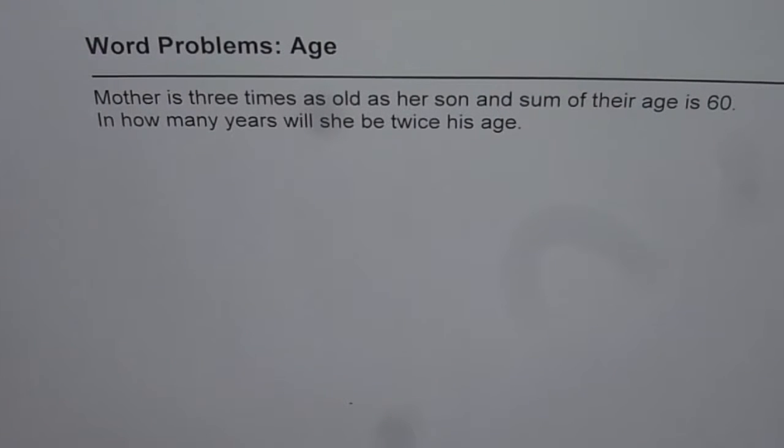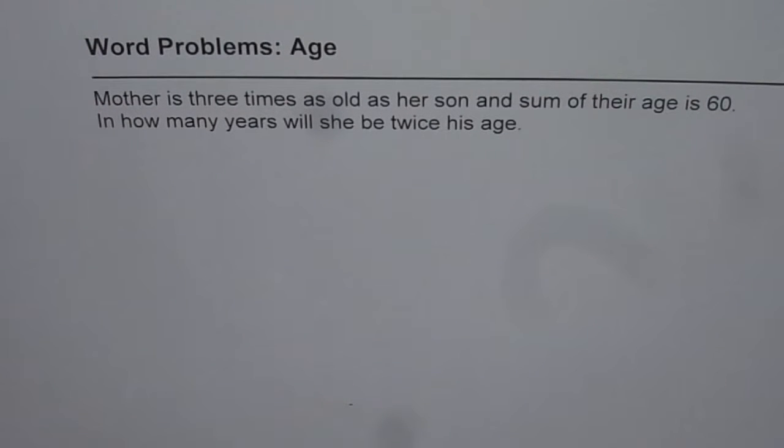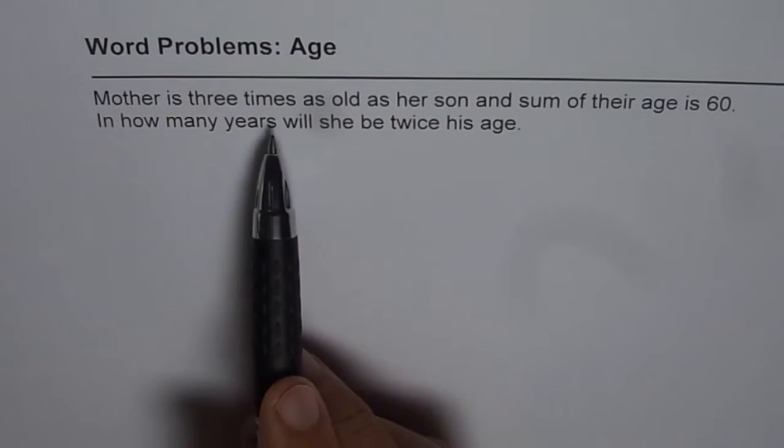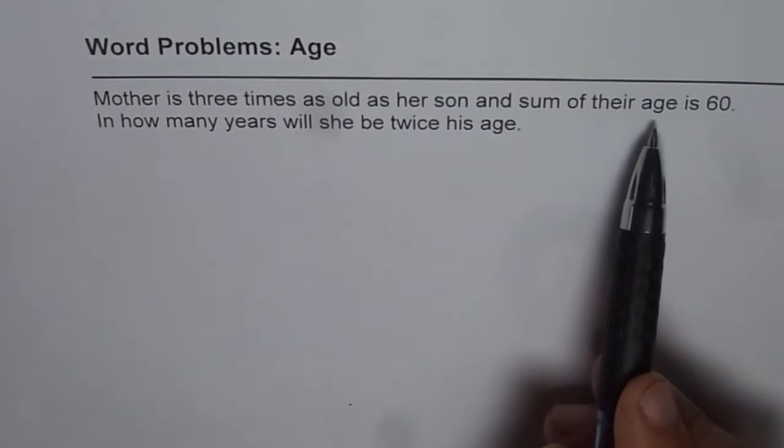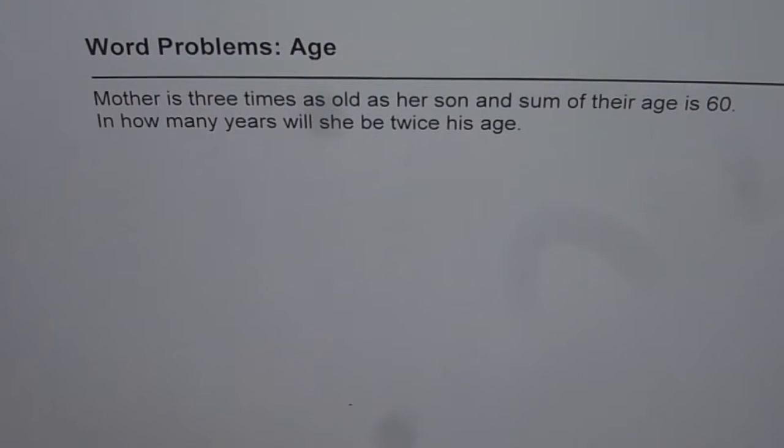Let us see how to solve word problems relating to age. The question here is: mother is three times as old as her son and sum of their age is 60. In how many years will she be twice his age?